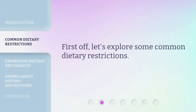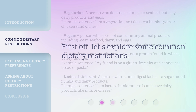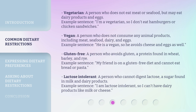First off, let's explore some common dietary restrictions. Vegetarian: a person who does not eat meat or seafood, but may eat dairy products and eggs. Example sentence: I'm a vegetarian, so I don't eat hamburgers or chicken sandwiches.